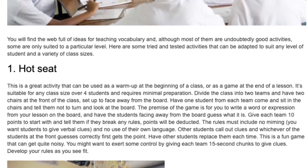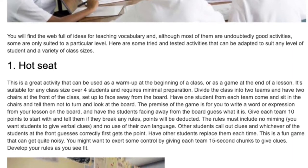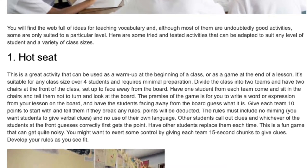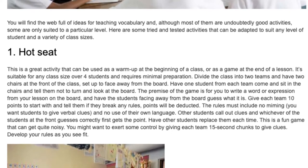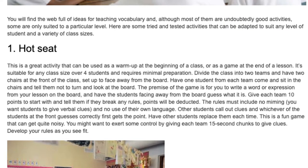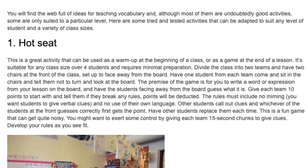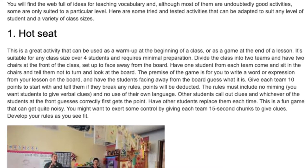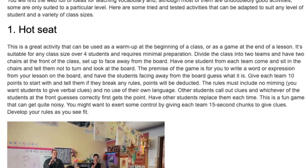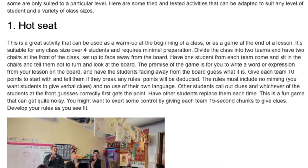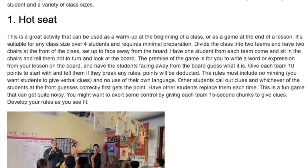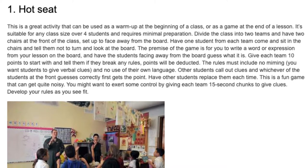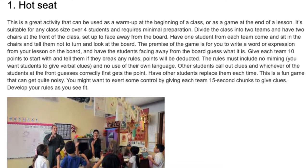Divide the class into two teams and have two chairs at the front of the class, set up to face away from the board. Have one student from each team come and sit in the chairs and tell them not to turn and look at the board. The premise of the game is for you to write a word or expression from your lesson on the board and have the students facing away guess what it is. Give each team ten points to start with and tell them points will be deducted if they break any rules. The rules must include no miming — you want students to give verbal clues — and no use of their own language.